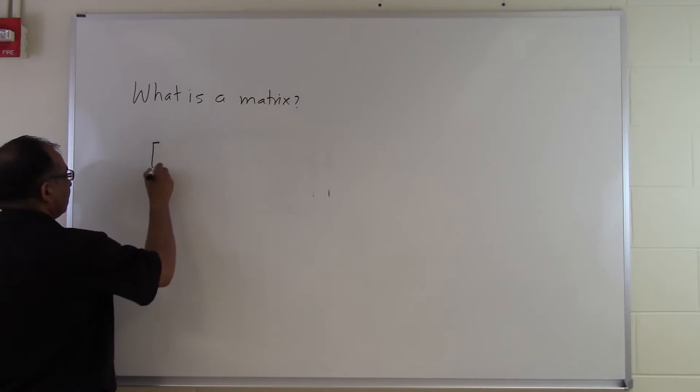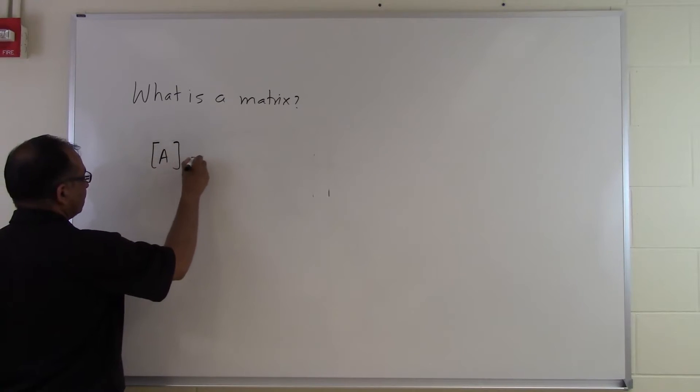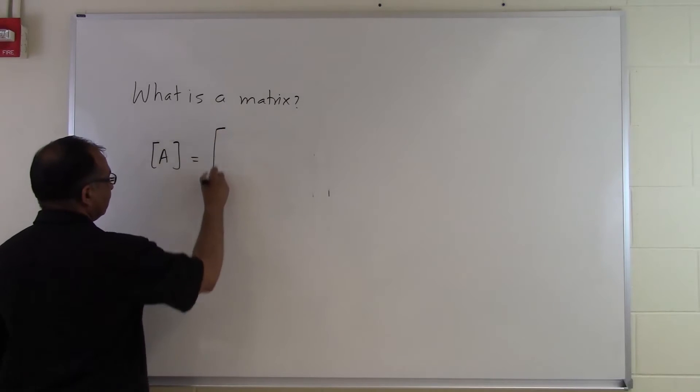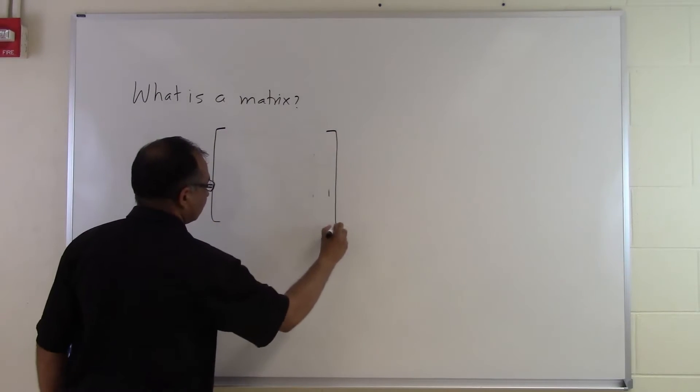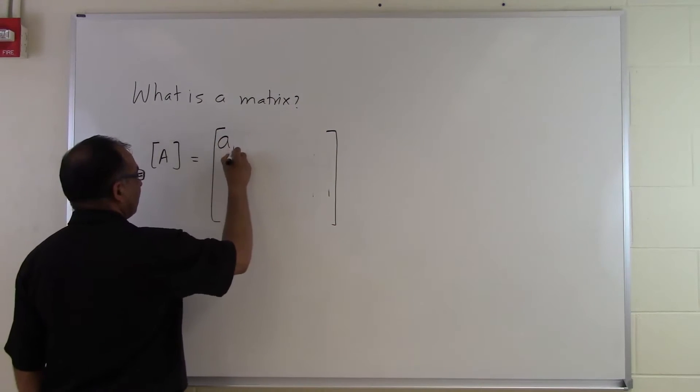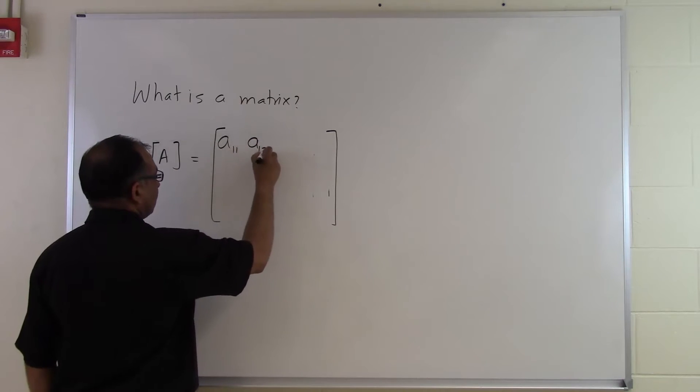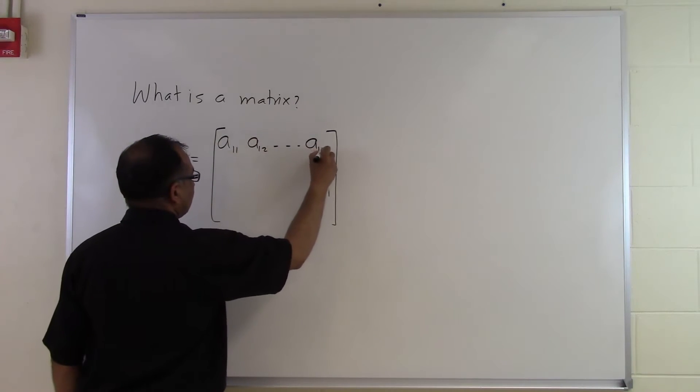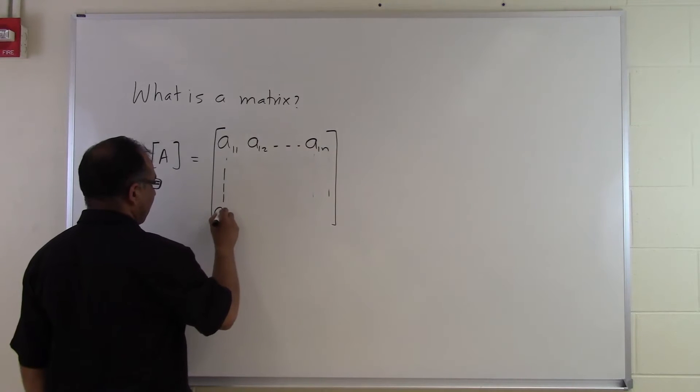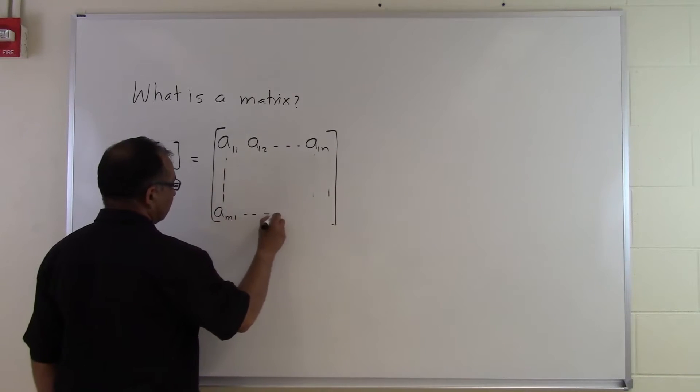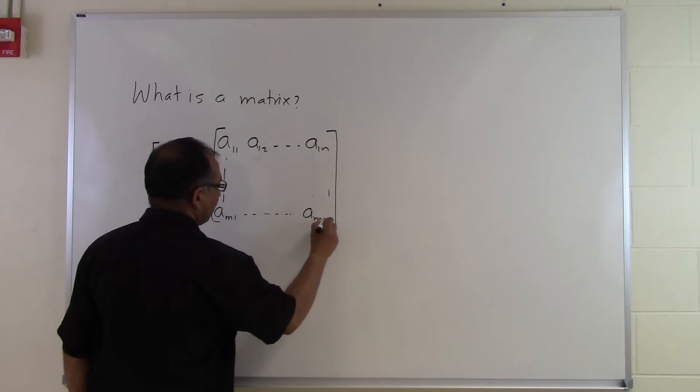What is a matrix? A matrix is a rectangular array of elements. Let's suppose we have a matrix A here, and we'll write down the elements: A11, A12, all the way up to A1N, and then we can have AM1 here, all the way up to AMN here.